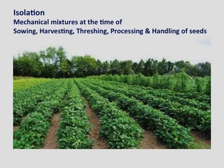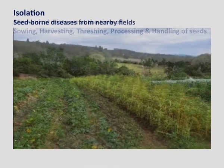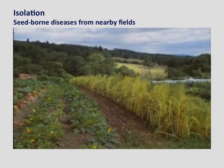The isolation of seed crops from various sources of contamination is a necessary requirement for raising seed crops. Contamination may be due to natural crossing with other varieties grown alongside or off-types present in the same field. Contamination may also be due to mechanical mixtures at the time of sowing, harvesting, threshing, processing, and handling of seeds. Contamination may further be due to seed-borne diseases from nearby fields. Protection from these sources of contamination is absolutely necessary for maintaining genetic purity and good quality seed.